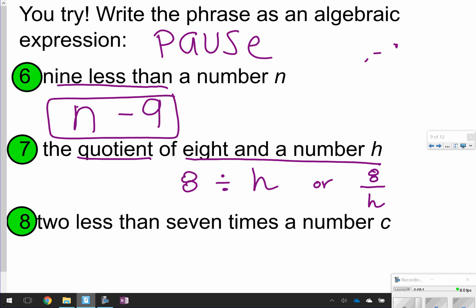The last one, number 8, 2 less than 7 times the number c. Again, 2 less will have to go at the end. And then 7 times the number c just means 7 times c, or 7c. So answer to number 8 is 7c minus 2. That is the order that you have to have it in, so just check your notes.